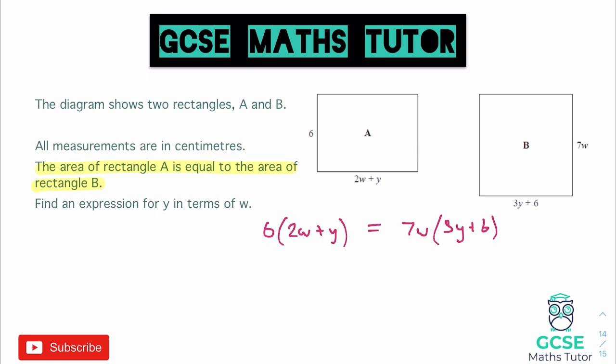Now all we need to do is get this to a point where it says Y equals something. We don't want any Y's on the right hand side, so we want to get all the Y's on the left and make sure it's just one Y. To start, we're going to expand these brackets. 6 times 2W gives us 12W, and 6 times Y gives us 6Y. Now we're going to multiply this bracket by 7W. 7 times 3 gives us 21. You can write these in either order - WY or YW doesn't really matter. And then plus 7W times 6, which is 42W. There are both of the expressions for the areas equal to one another.